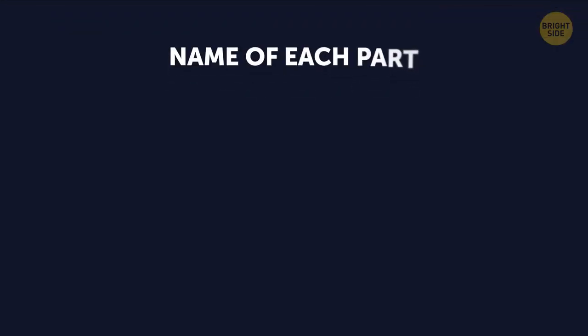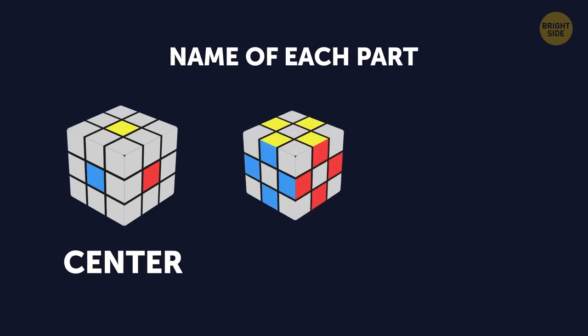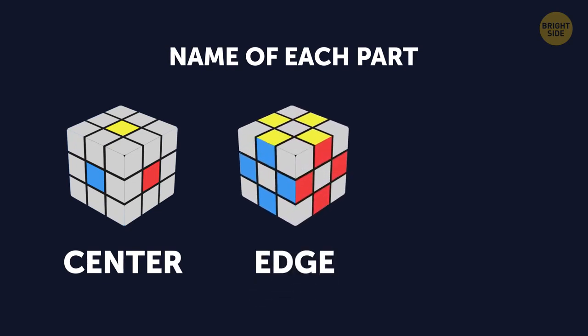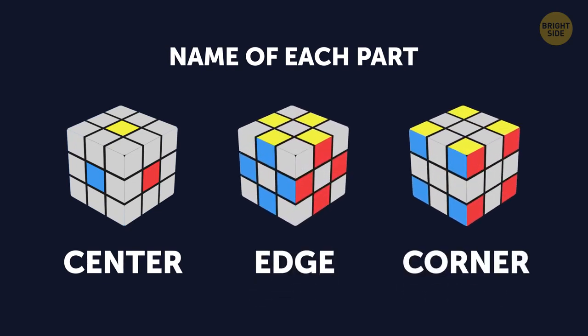Okay, for starters, let's see what a 3x3 cube consists of. It has three main parts: center, edge, and corner.